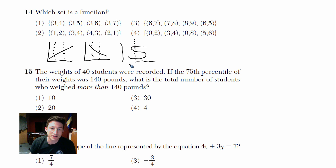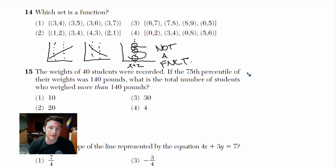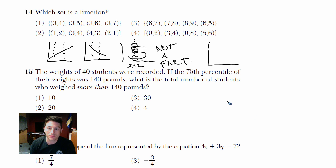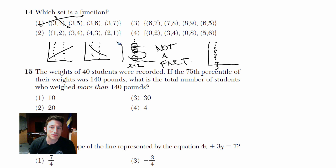At x equals 2, for example, we have one, two, three values — so this is not a function. When you test these sets, figure out which one has two y-values for the same x. For number 1, there's a point at (3, 4) and right above it (3, 5), so it fails the vertical line test — number 1 is out.